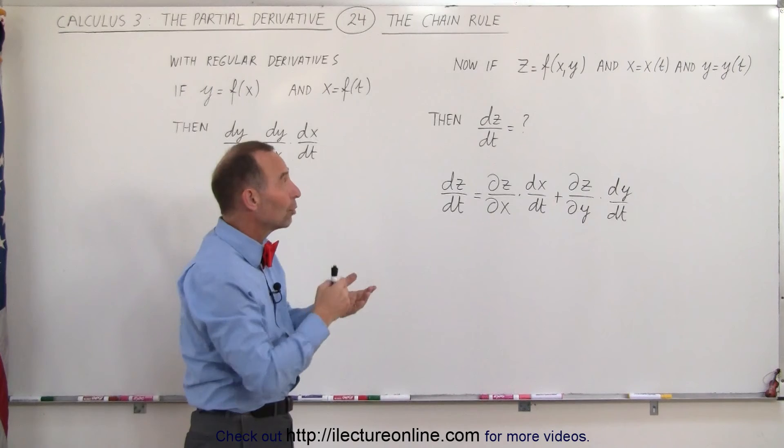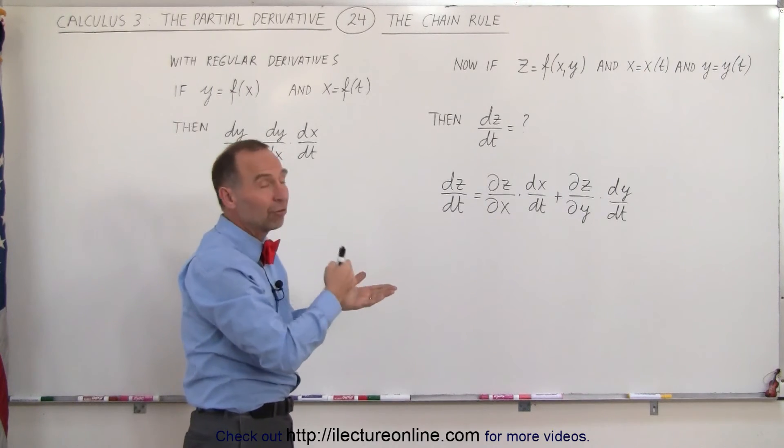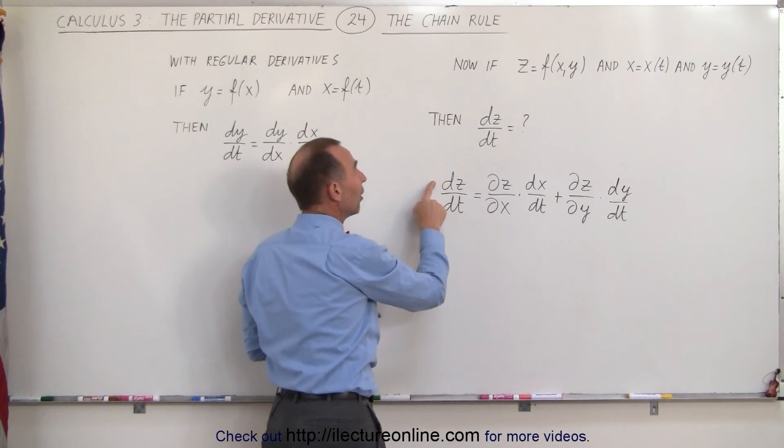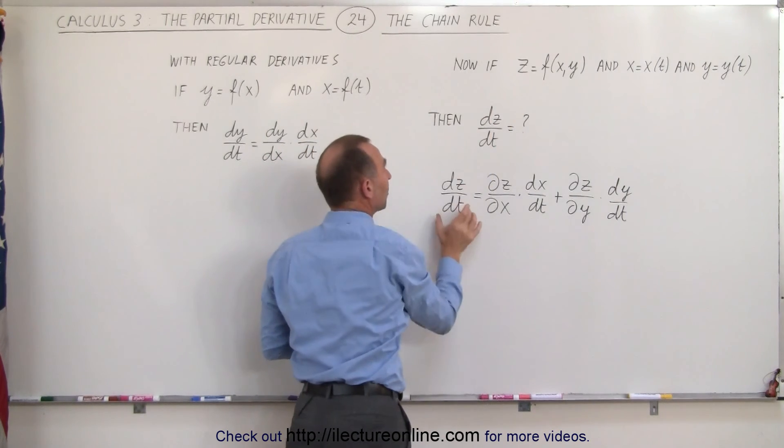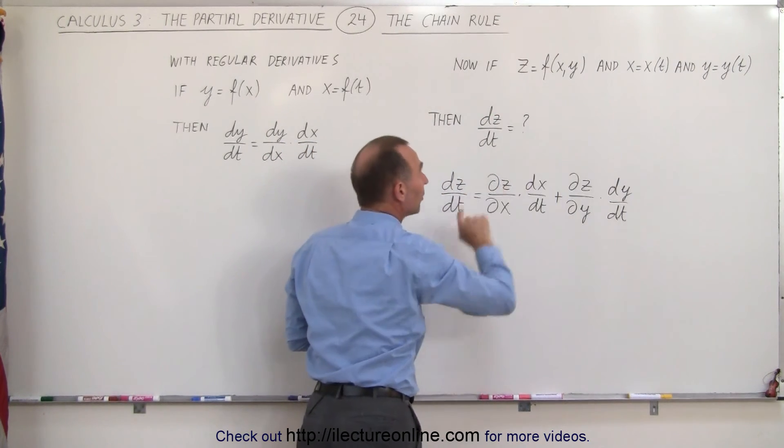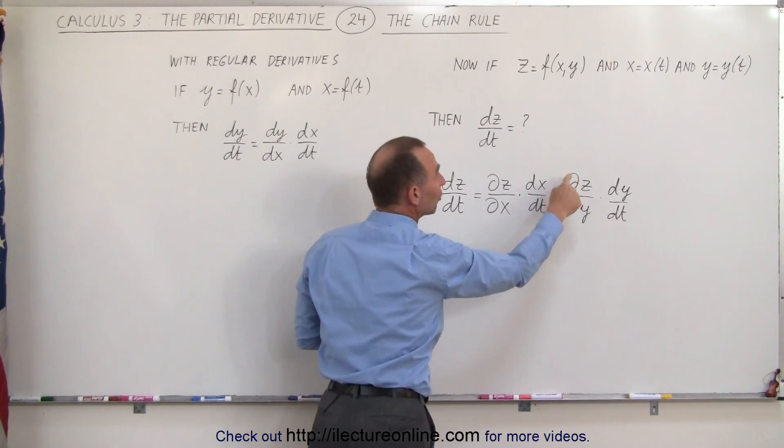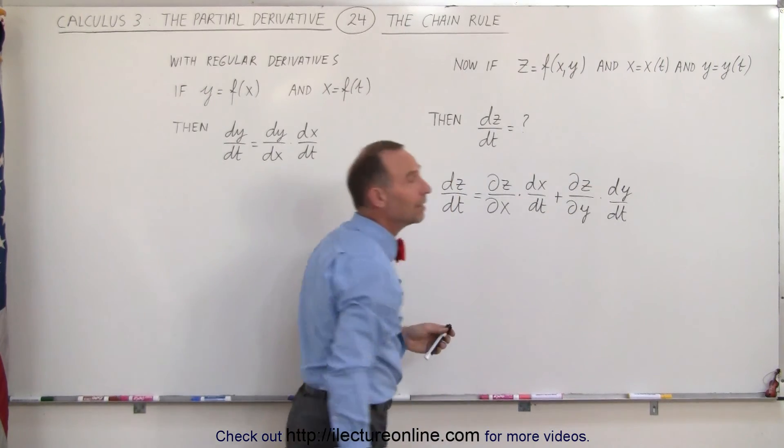So when we have a function with two variables and each variable is a function of a third variable, then if you want to find the derivative of the function z with respect to the third variable, it's the partial of z with respect to x times dx/dt plus the partial of z with respect to y times dy/dt.